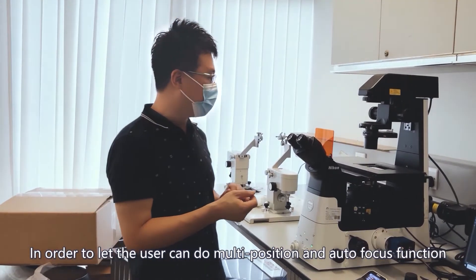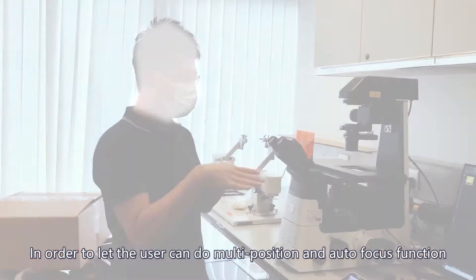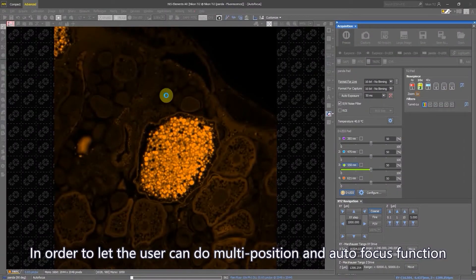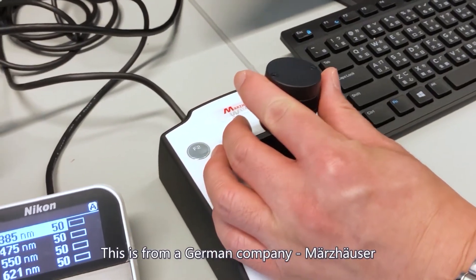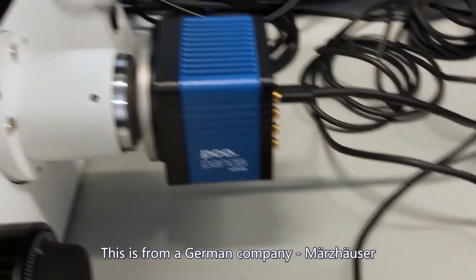So in order to let the user do multi-position and auto-focus function, I put a motorized stage. Even if it is not from Nikon, it is from a German company, Marzhauser. I can enjoy the XY motorization function, so I can do multi-position.